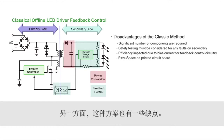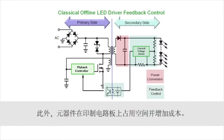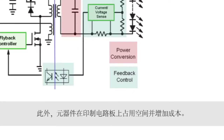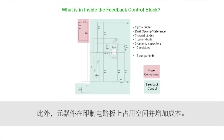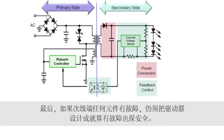Conversely, there are some disadvantages. The control circuitry on the secondary side consumes power, so it reduces the efficiency since this power is not converted into light. In addition, the componentry takes up room on the printed circuit board and adds cost. And lastly, if any component fails on the secondary side, the driver must still be designed to fail safely.